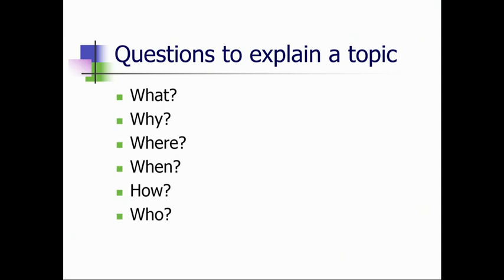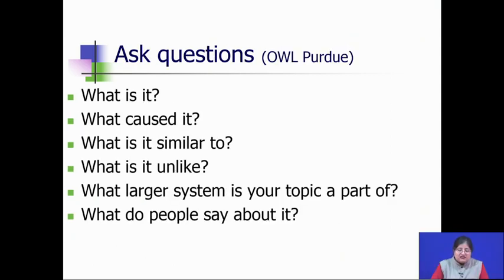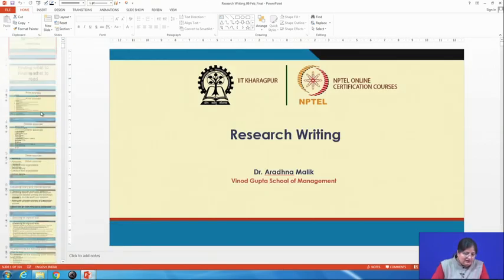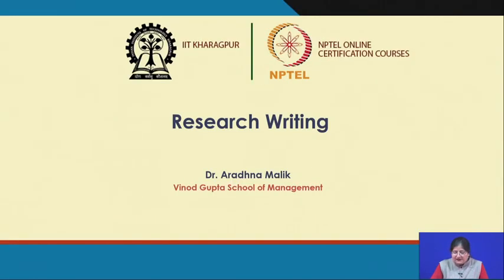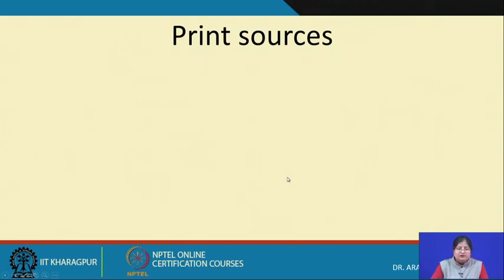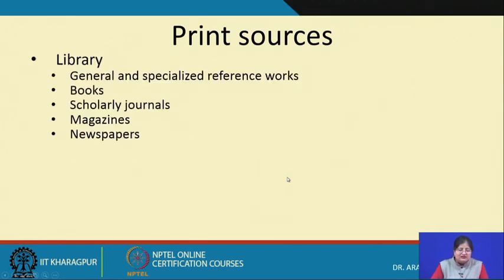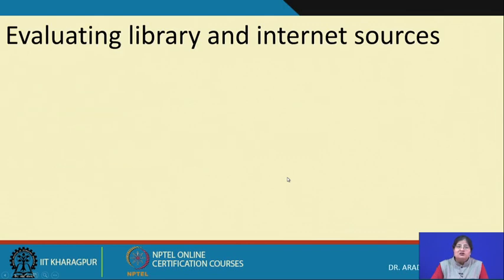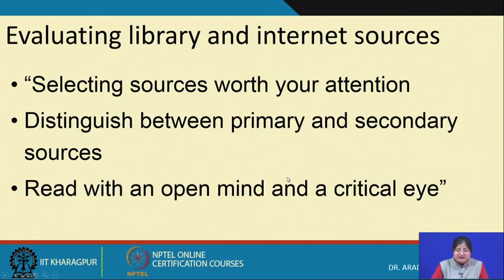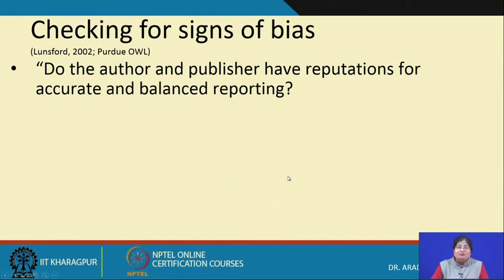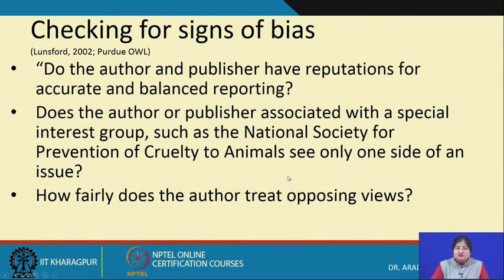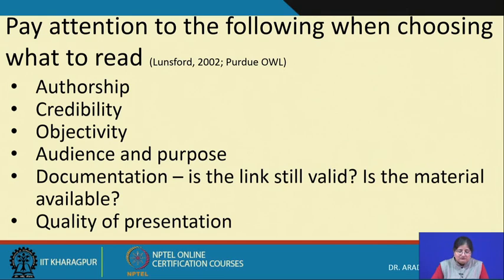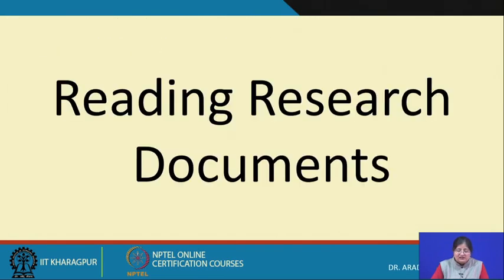We discussed the various questions to explain a topic, we talked about asking questions, and then we talked about finding what to read. We talked about different sources — the library and online sources — then we moved on to other sources, evaluating library and internet sources, checking for signs of bias — how do you find out if these sources can be trusted, if they are credible — and then choosing what to read before moving on to reading research documents.